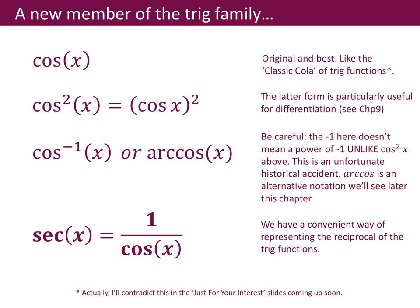First of all, we all know about cos — we should be happy with that. We know that cos²x means cos of x, all squared. And we know that cos⁻¹ means arc cos. This doesn't mean the reciprocal. If you think about the laws of indices, we know that 1/x equals x to the minus 1. Unfortunately, there was a historical mathematical accident — cos⁻¹ does not mean 1 over cos. It's the inverse of cos.